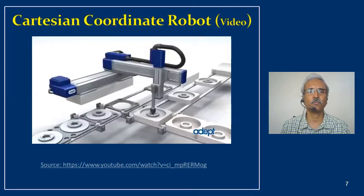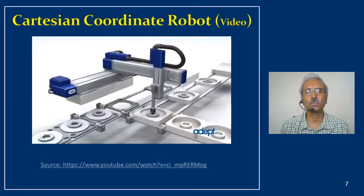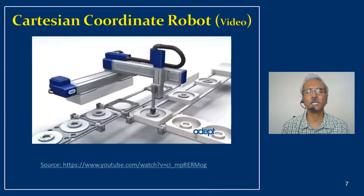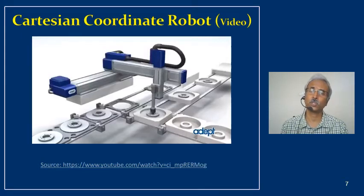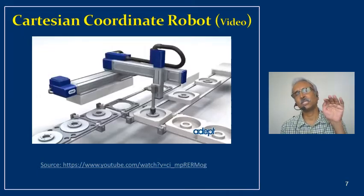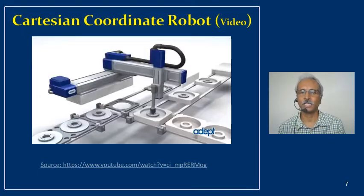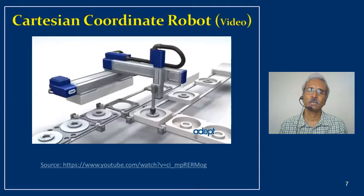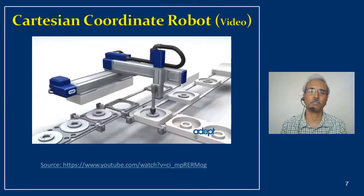Here we will see a small video of the Cartesian coordinate robot used for pick-and-place operations. You can see three axes moving in a linear fashion — all sliding joints — and all three axes are operated simultaneously.